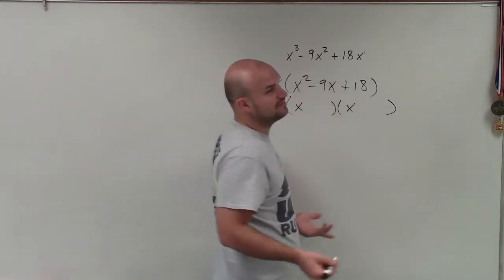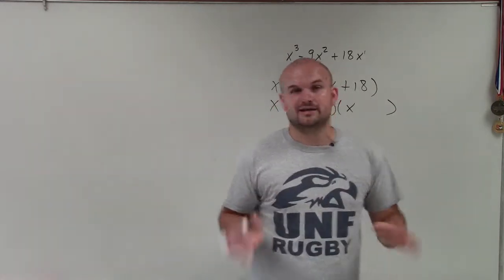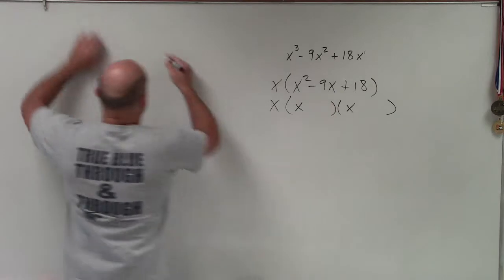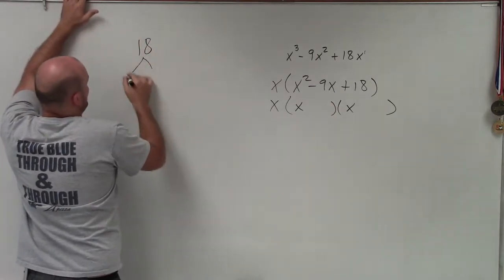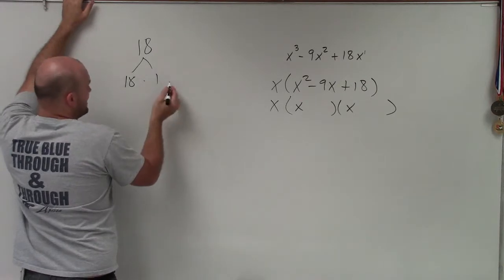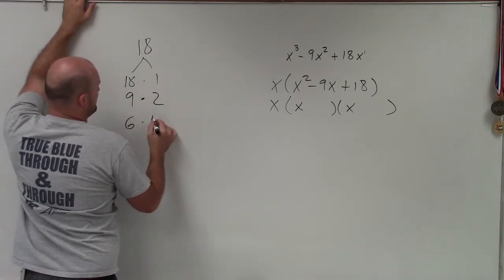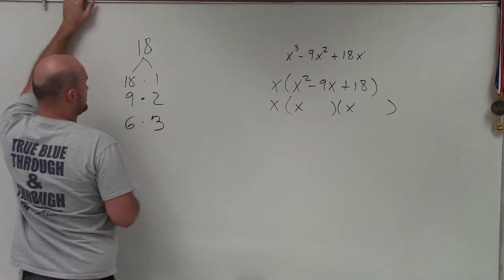And then the last two numbers have to multiply to give me a positive 18. So the two numbers could be two positive or two negative, and we'll get to that in a second. So let's write down the factors of 18. So I have 18 times 1. It could also be negative 18 times negative 1. I have 9 times 2, and I have 6 times 3. As far as I know, those are the factors.